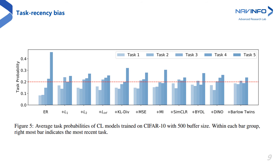Replay-based methods are prone to task recency bias — the tendency of a continual learning model to be biased towards classes from the most recent tasks. The figure shows the normalized probabilities of each task of a sequential CIFAR-10 trained model, computed by averaging probabilities of all samples belonging to the associated classes in the class incremental learning setting. The predictions in vanilla ER are biased mostly towards recent tasks, with the most recent task being almost four times as much as the first task. Therefore, the predictions stored in the buffer are completely biased towards their corresponding task logits. Since consistency regularization penalizes any deviation in predictions, task recency bias is mitigated as a by-product.